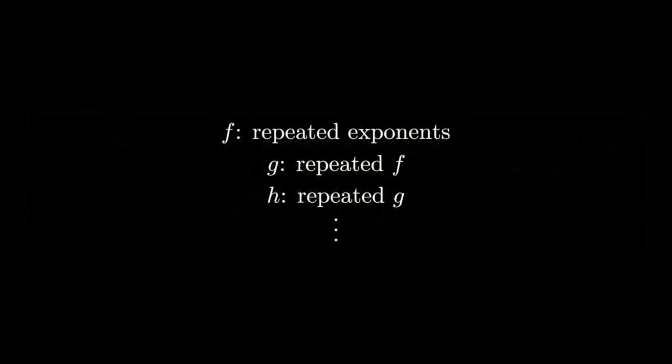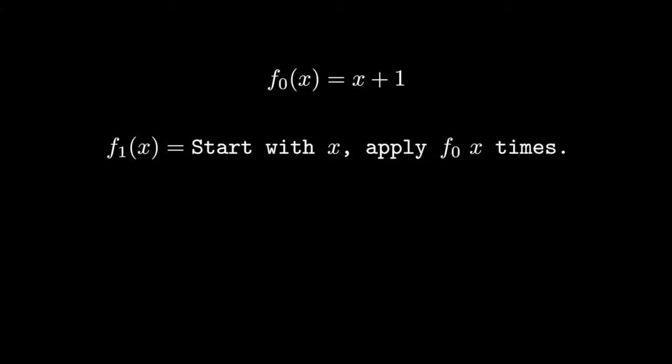So let's take a fresh mathematical look at repetition. We start with a slowly growing base function f0. It takes the input x and returns x plus 1. We define f1 as taking an input x and then applying f0 x times on it. f2 takes input x and then applies f1 x times on it, and so on. We get a function f_i for every positive integer i.